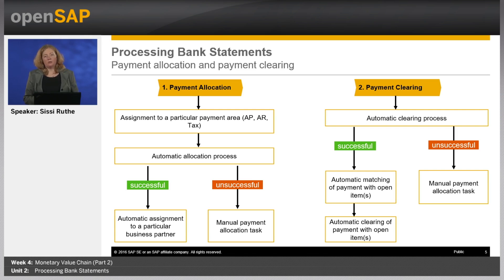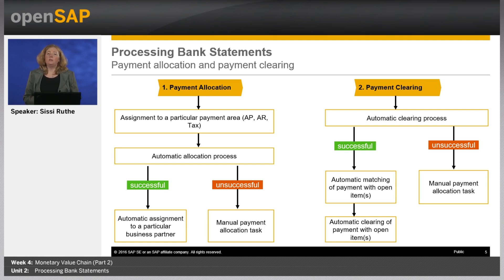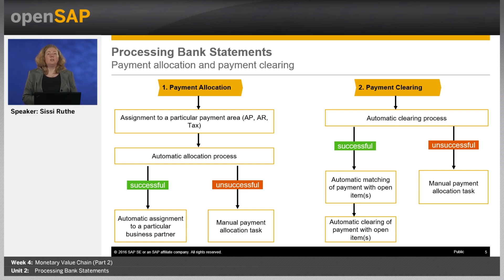During payment allocation, the payment is assigned to a particular payment area such as accounts payable, accounts receivable, or tax, and then to a particular business partner like a customer, supplier, or tax authority within that area. During payment clearing, one or several open items are matched to the payment and cleared against it. The system uses information like business partner, bank account, and payment amount to select the correct business partner and open items. Usually all relevant information is available and correct, and both steps are performed automatically by the system.